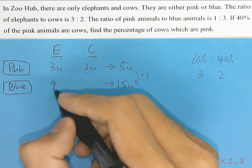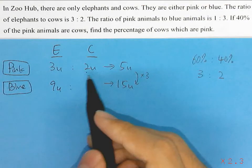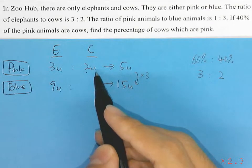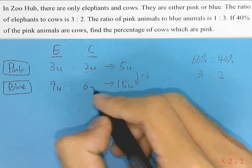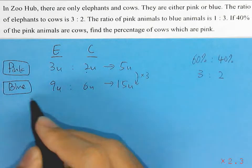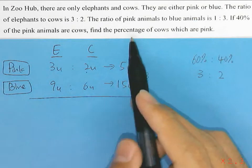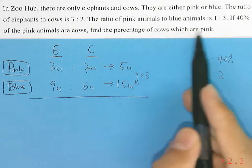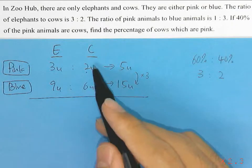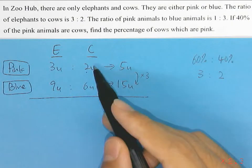If we take 3 units multiplied by 3, we will have 9 units for blue elephants. For the cows, we multiply by 3 as well, so we will have 6 units for the blue cows. Now the question is asking for the percentage of cows which are pink. First we'll find the total number of cows, which will be 2 units of pink cows plus 6 units of blue cows.